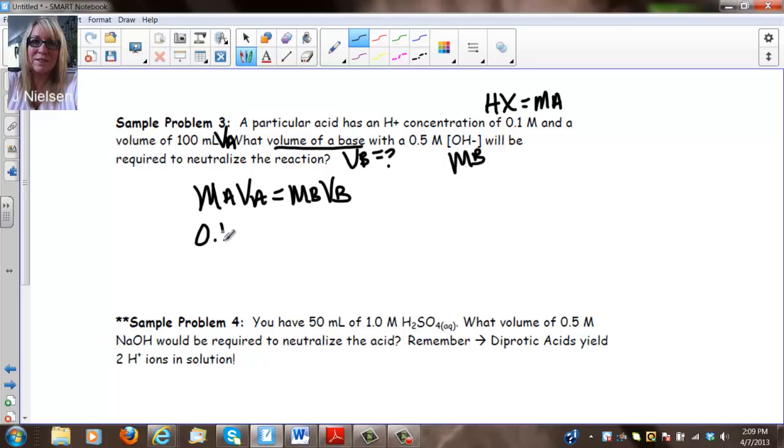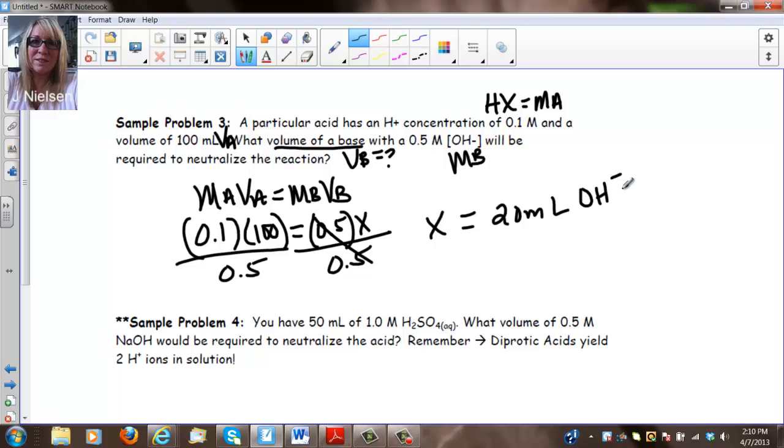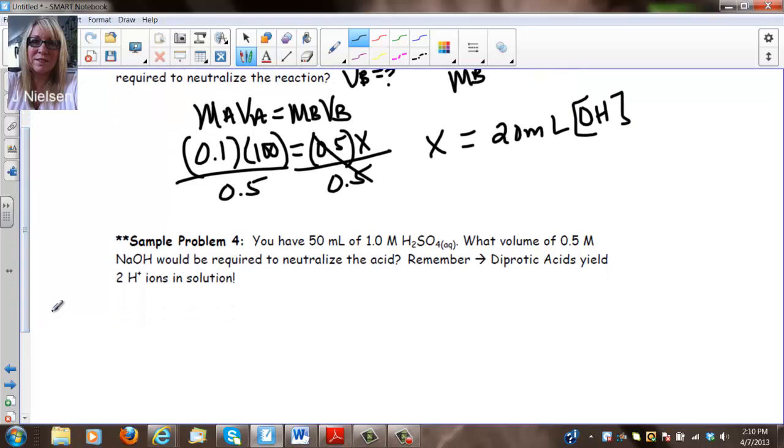Again, writing my formula MAVA equals MBVB. My molarity of my acid is 0.1. My volume is 100. I don't know the volume of my base, but I know that the molarity of my base is 0.5. So I divide both sides by 0.5. These cancel. And I get X equal to 20 milliliters of the base or OH concentration because we don't know what that is. They didn't specify. And in this problem.